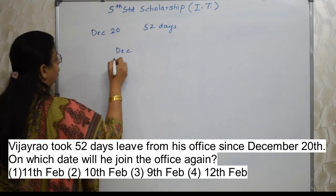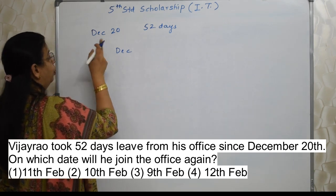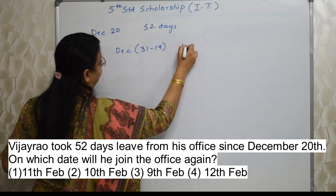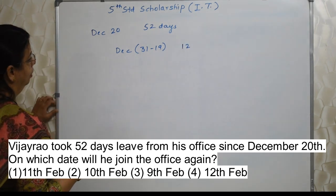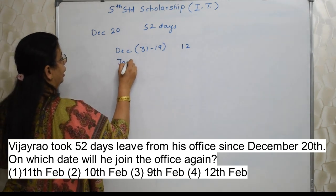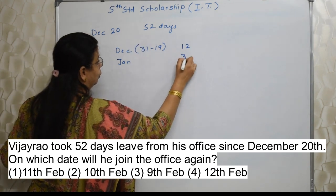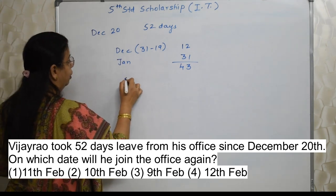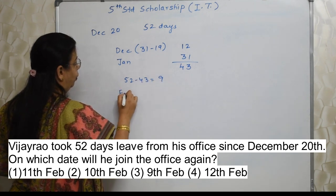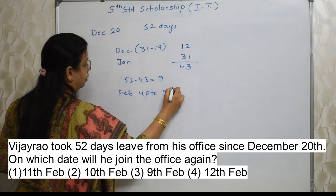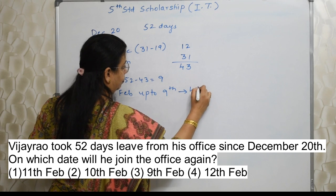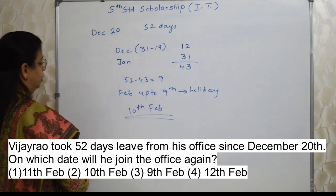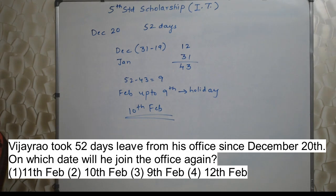He started his leave from 20th December for 52 days. So after these 52 days, on the 53rd day he will join office again. We need to find out the 53rd day. December, from 20 means up to 19 he was not on leave. So out of 31, 19 days gone, answer is 12. And January entire month, 31 days. So 43 days are over. Still 52 minus 43, 9 days remaining. So February up to 9 holiday will be there. So 10th of February he will join office. Very easy.